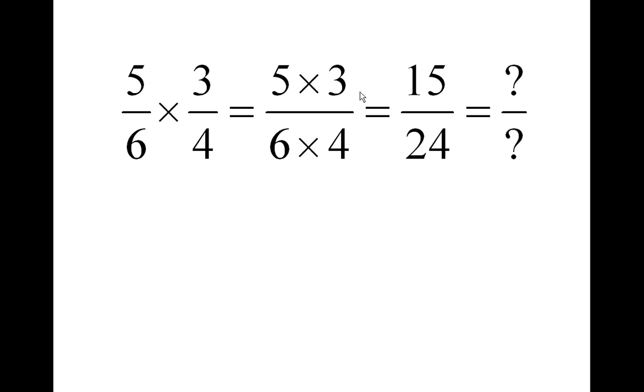Five times three is fifteen on the top. Six times four is twenty-four on the bottom. Now, you can cancel that down by three, can't you? So that's going to give you five over eight. Five eighths if you cancel it down.